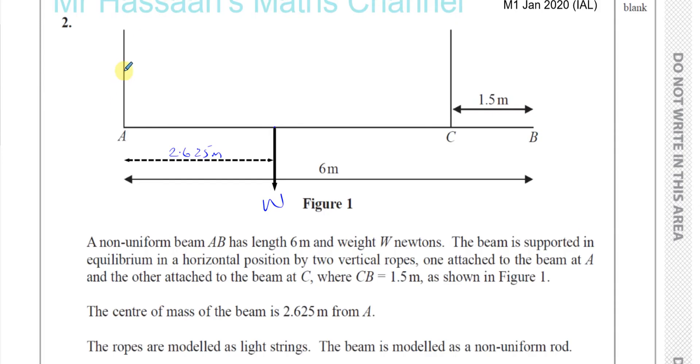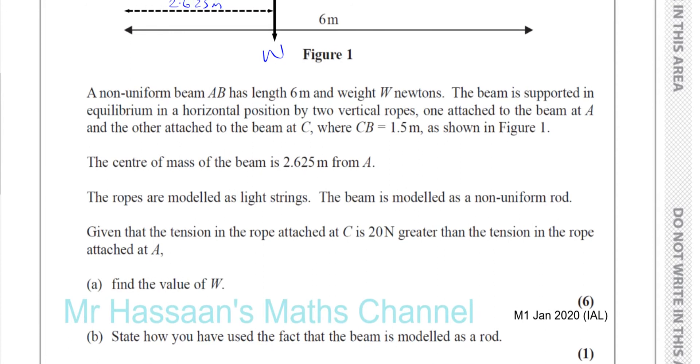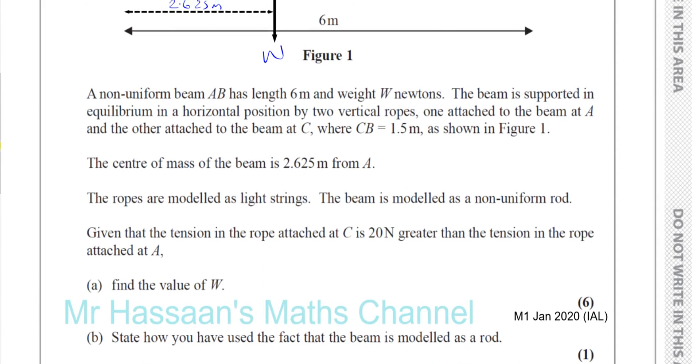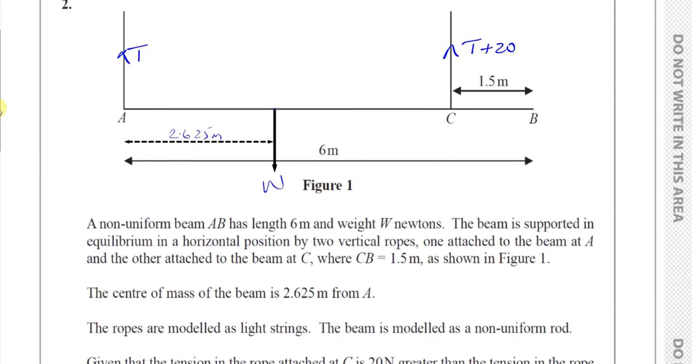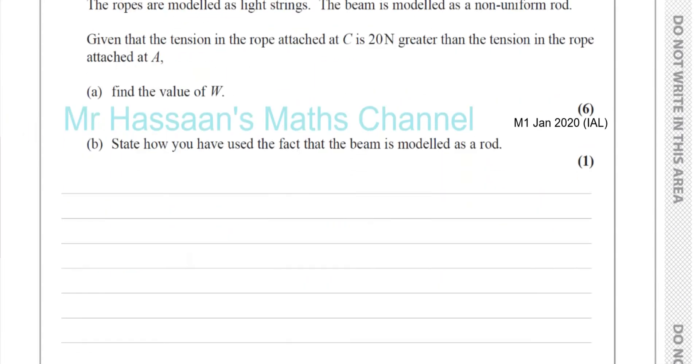Okay, so at A, if this is the tension T, then C, the tension is going to be T plus 20. Okay. Then it says, find the value of W and state how you've used the fact that the beam is modeled as a rod. Okay, so let's just replicate this diagram down here. There we have it.